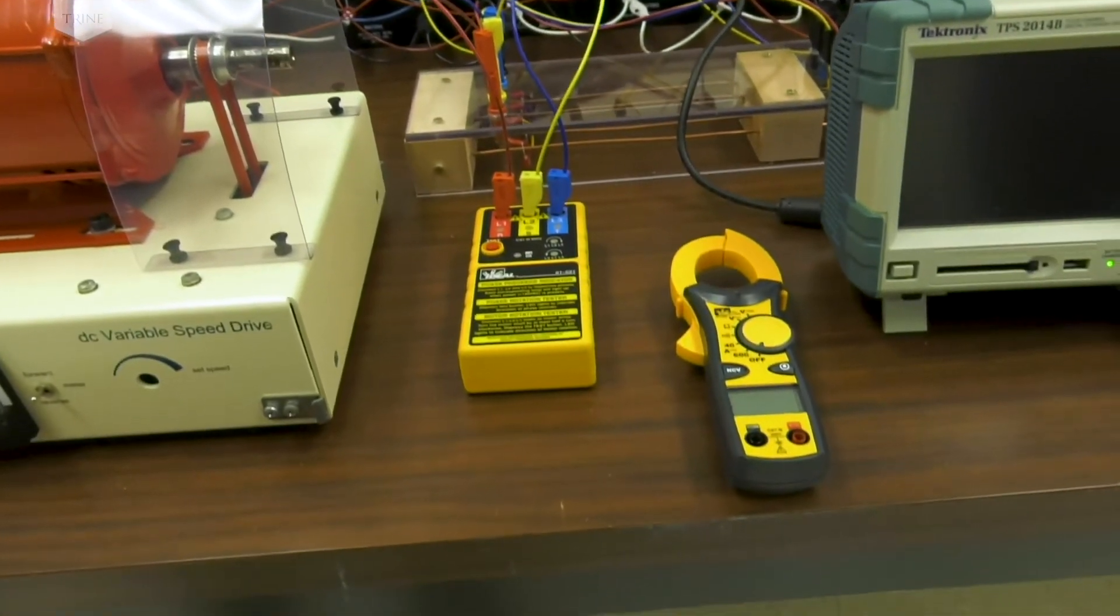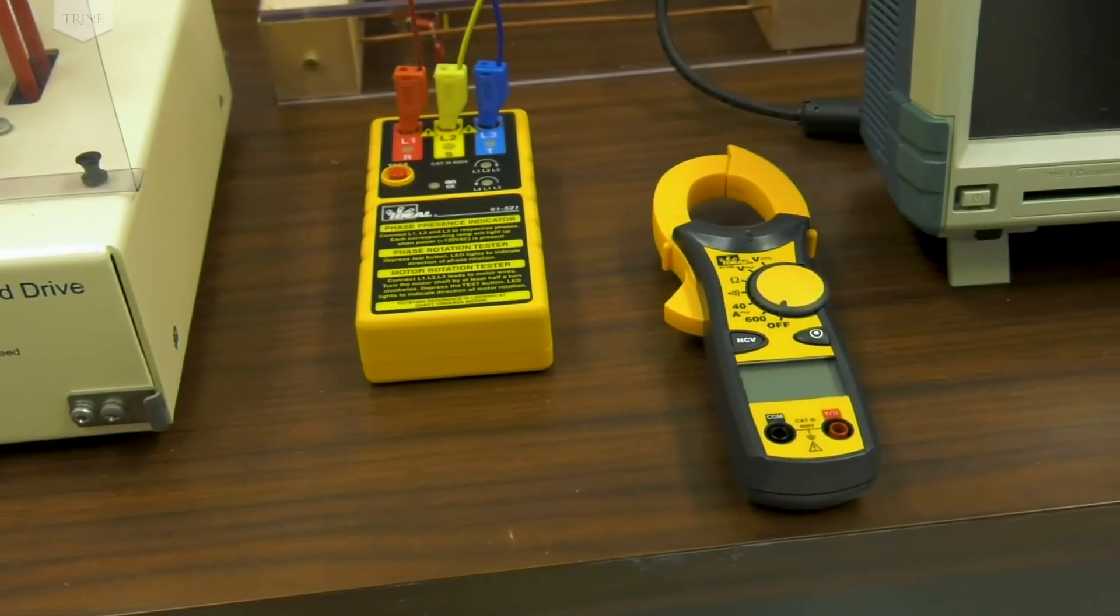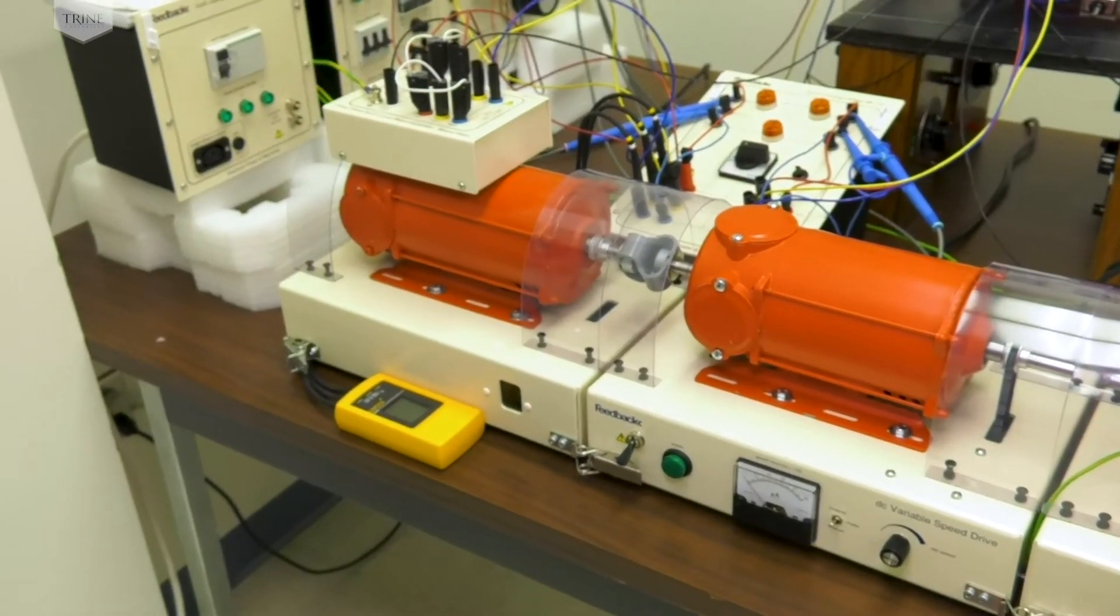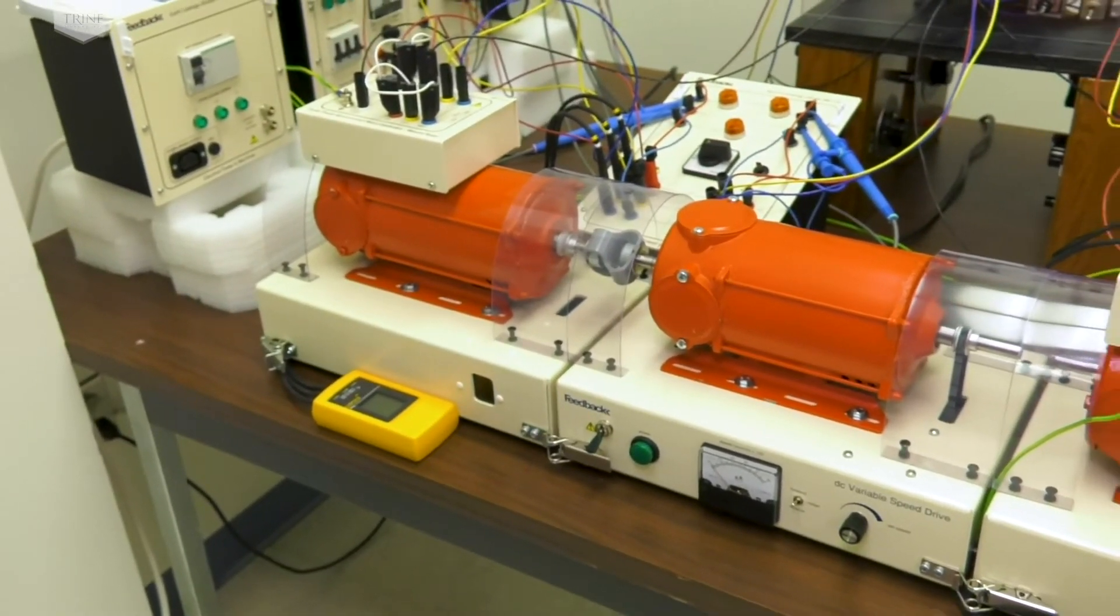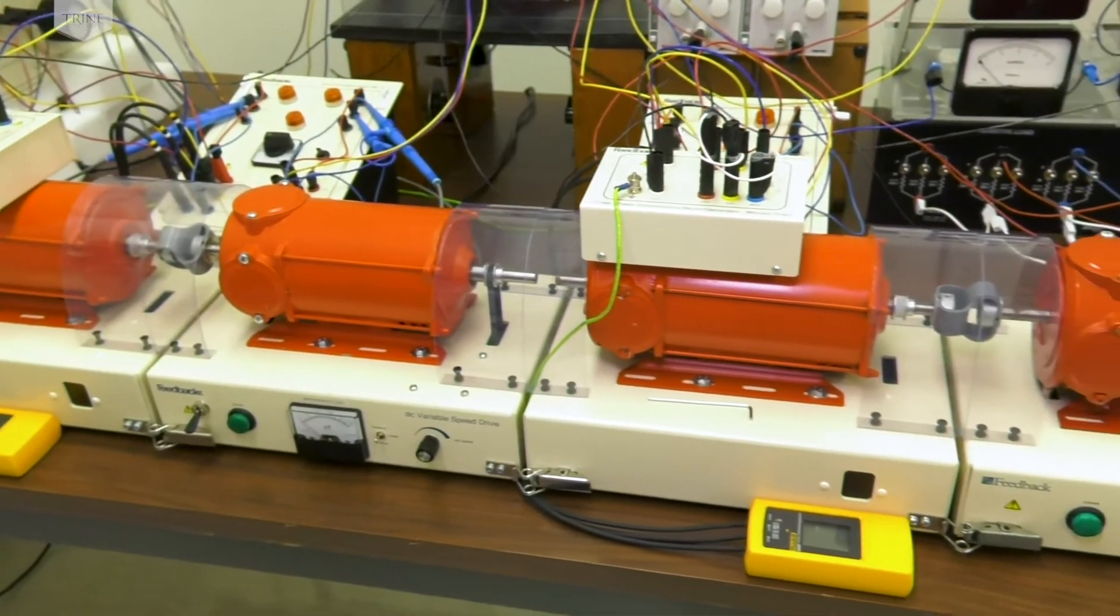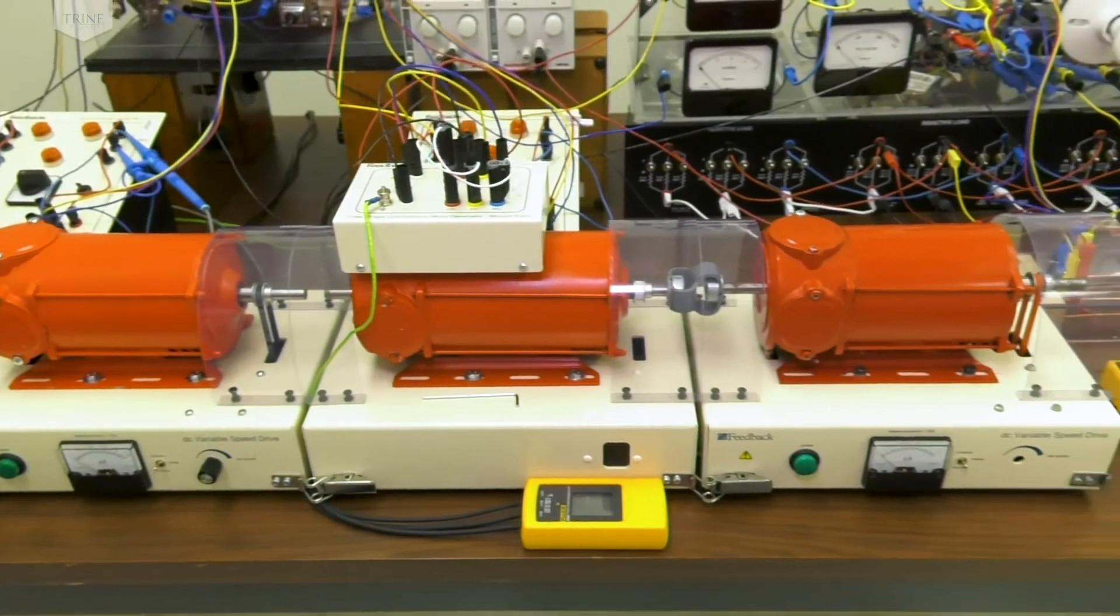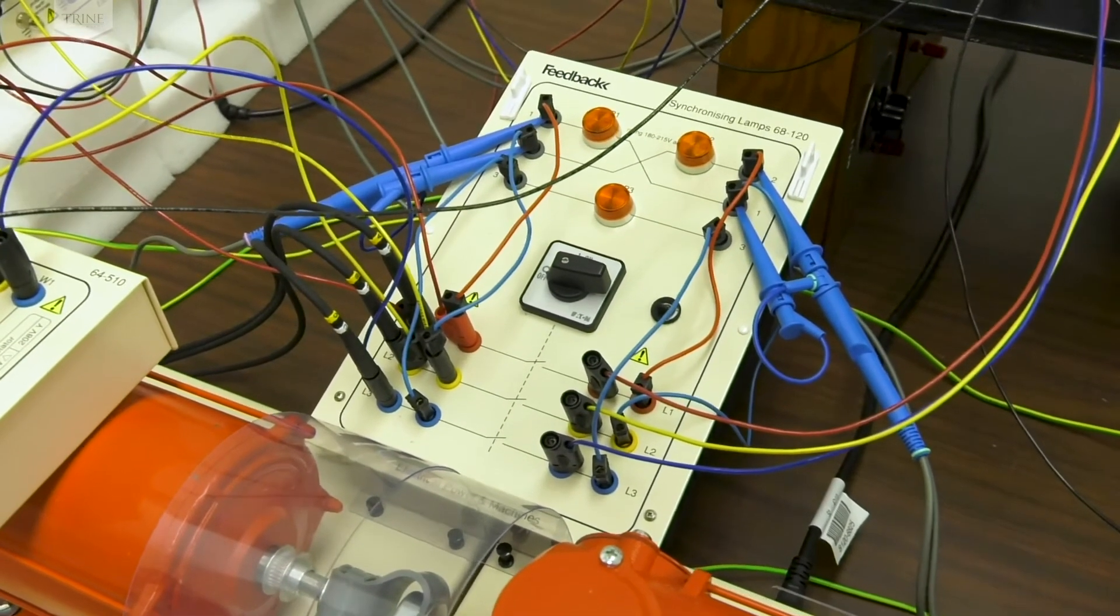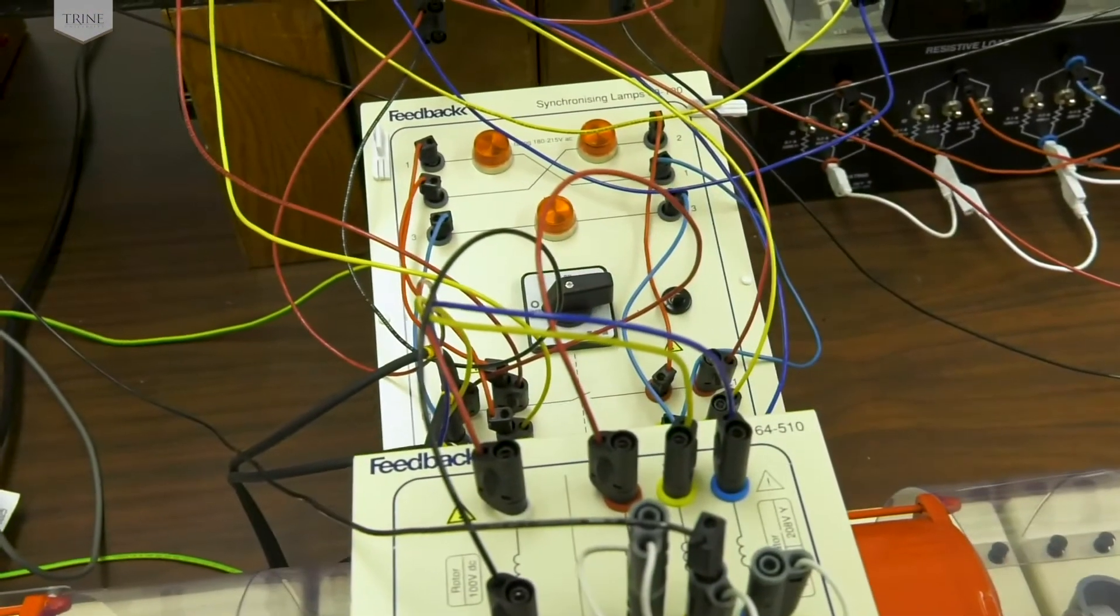Two lamp panels include a synchronizing box that allows students to synchronize a three-phase machine to the mains. DC power supplies provide field supply to the drive motor and generator. There are three meters to measure voltage, current, and power showing what is coming in from the mains and each machine. Other meters measure current and power going into the load.